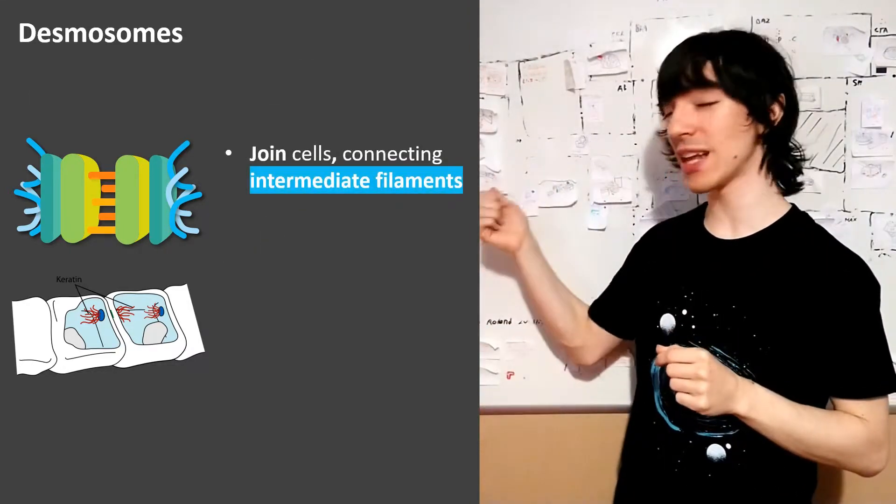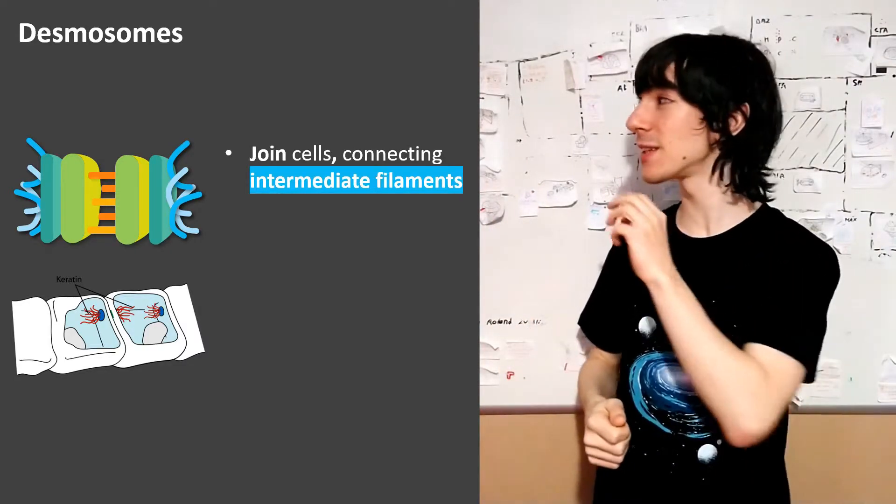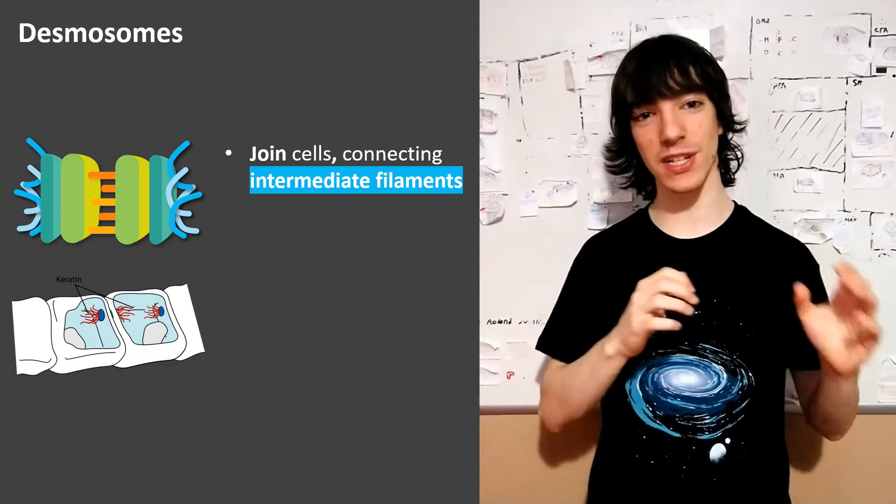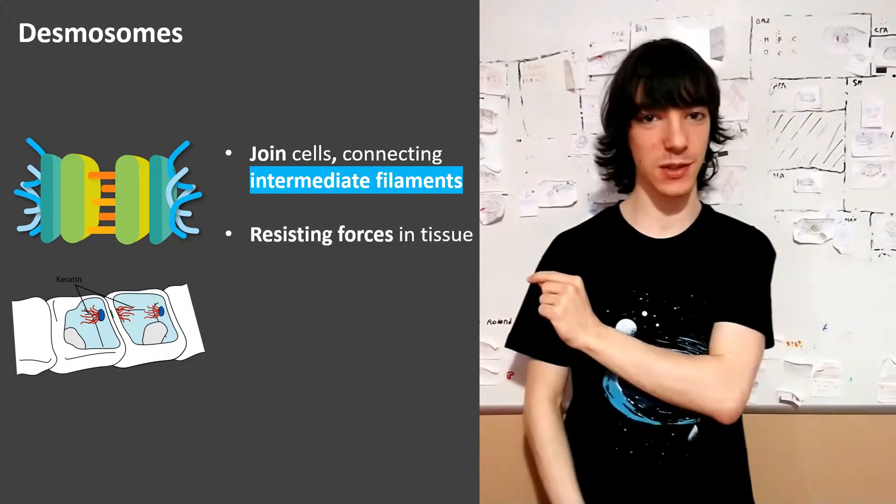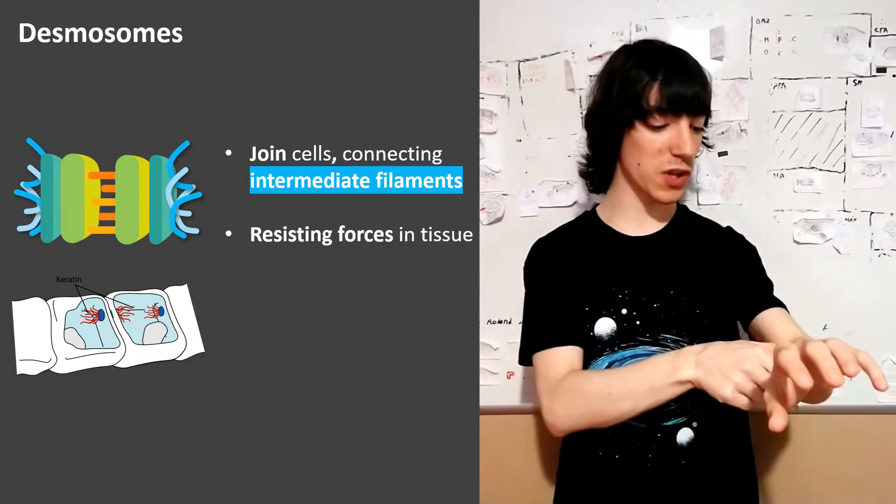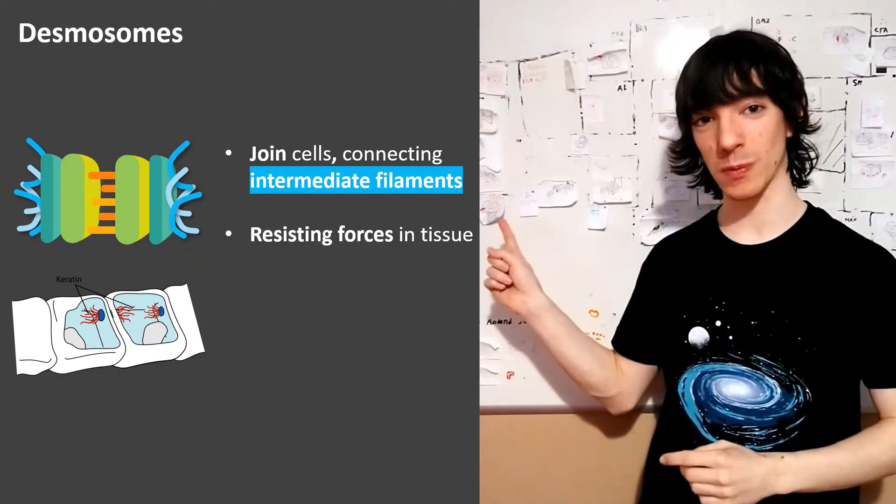And that's why not only do they connect cells to one another, they are also the best filaments and desmosomes, and the best intercellular junction for resisting forces in the tissue. The reason why, when you pull on your skin, it doesn't fall off, is because of desmosomes.